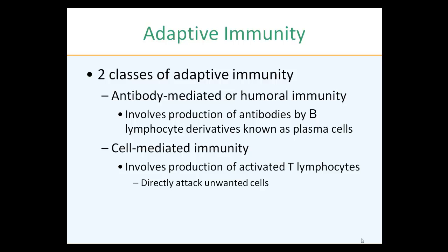We now move into something much more sophisticated and selective, but you'll realize it's easier to remember — the adaptive immune response. There are two classes: first, the humoral response, which involves antibodies secreted by plasma cells that originated as B lymphocytes; second, the cell-mediated response, which involves the activation of T lymphocytes.